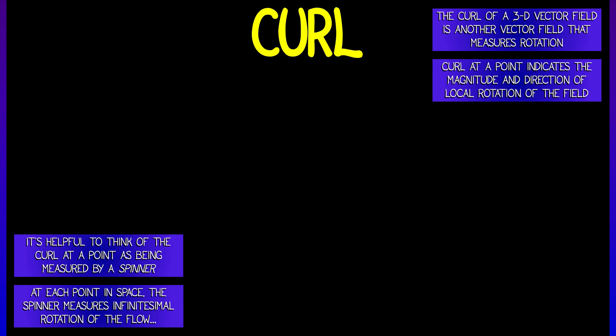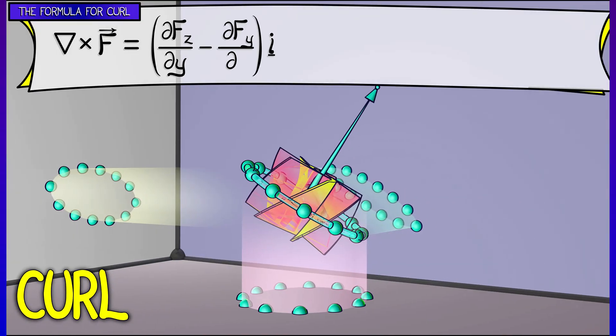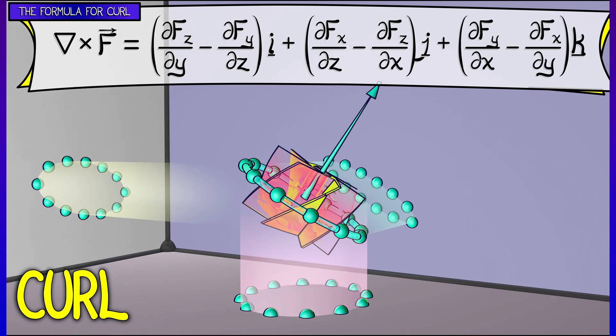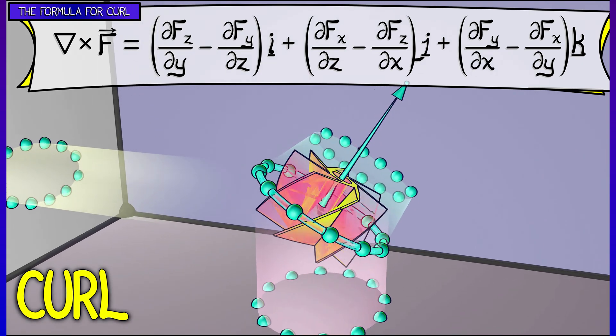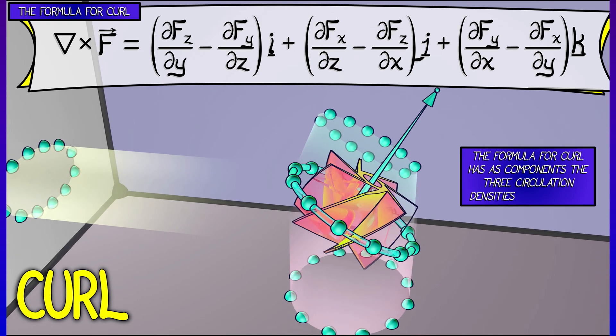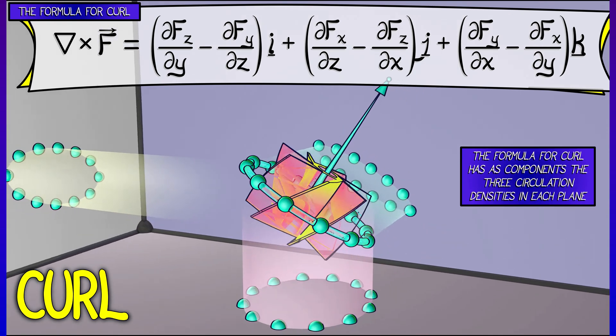What is the formula for it? The formula is complicated looking, but it has elements that are reminiscent of what we saw with the curl density in 2D. In fact, if you think about what the formula is, it has, as its three components, the three different circulation densities in each plane.